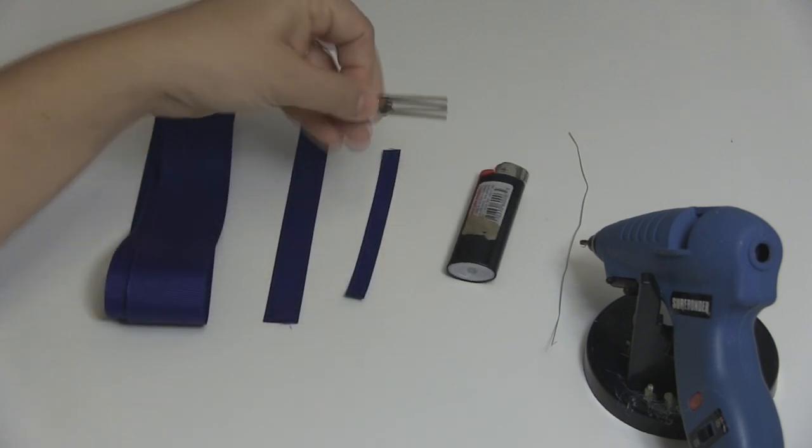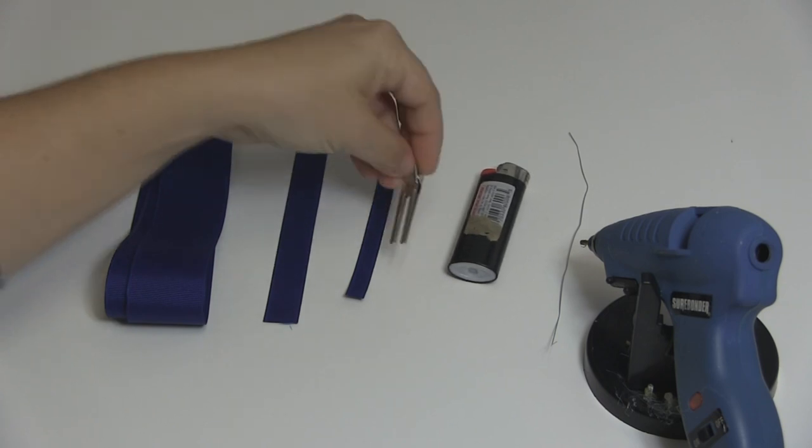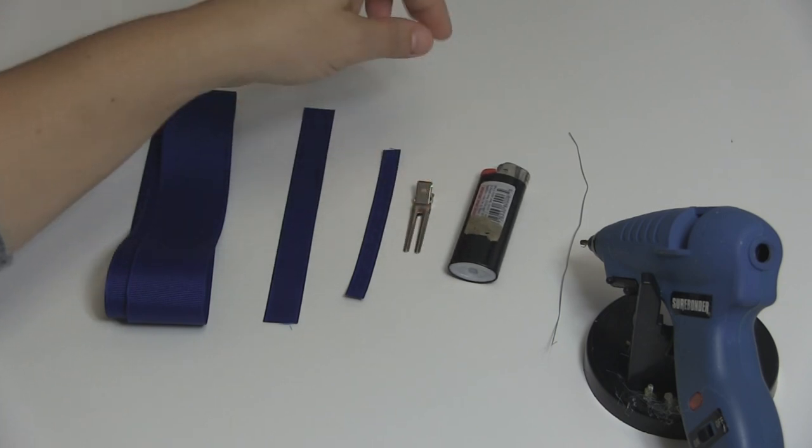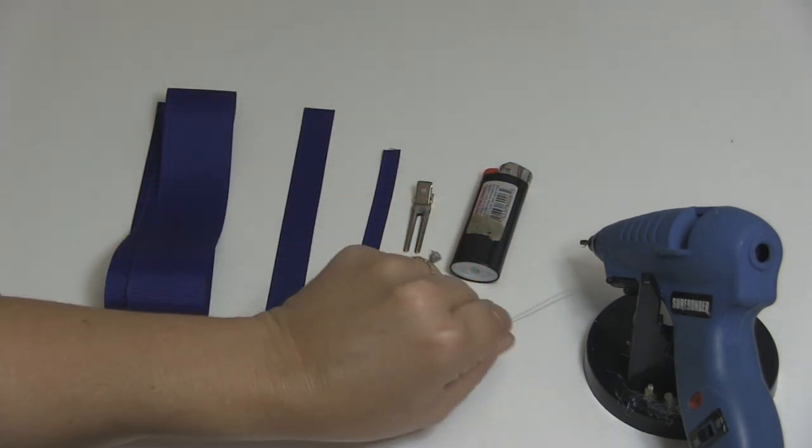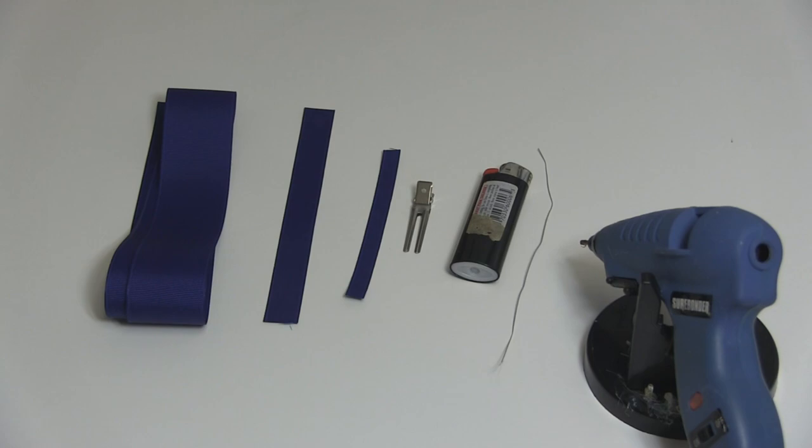A clip - I'm going to be using a double prong alligator clip but you can use the single prong also, a lighter or heat sealer, some wire, and a glue gun.